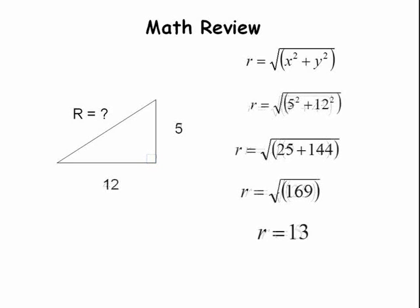Another right triangle that shows up frequently on exams is the 5, 12, 13 right triangle. If one side is 5, 5 squared is 25. If the second side is 12, 12 squared is 144. 144 plus 25 equals 169. The square root of 169 is 13.